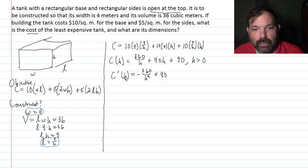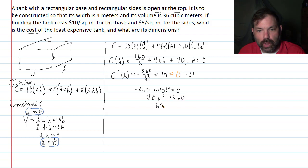So we have C prime of H is negative 360 over H squared plus 40. Let's set that equal to 0. So then solving this equation, let's multiply through by H squared. So then negative 360 plus 40H squared is 0. So this is quadratic, but there's no H term. There's only the H squared term. So I can use the square root property to solve. 40H squared is 360. H squared is 9.